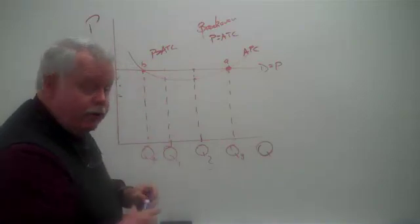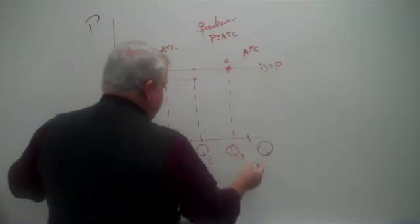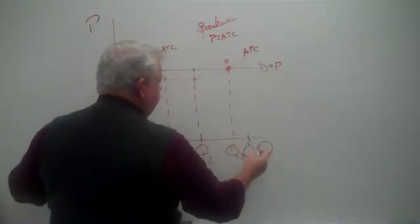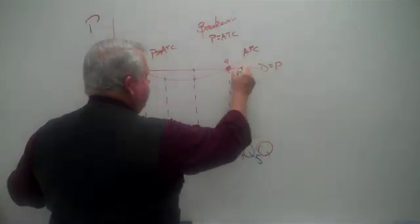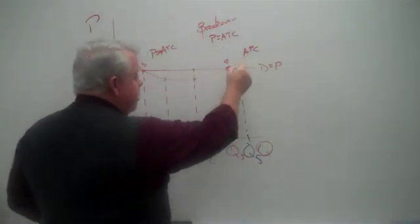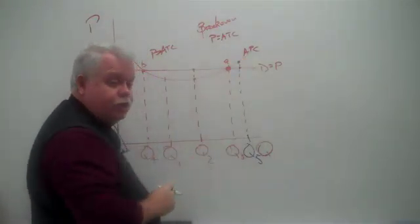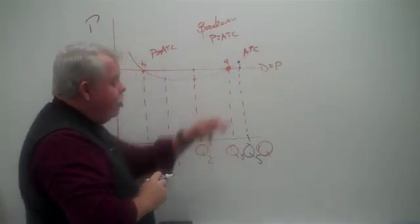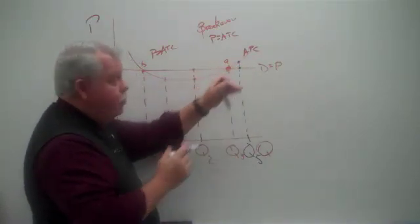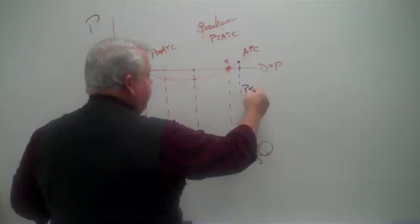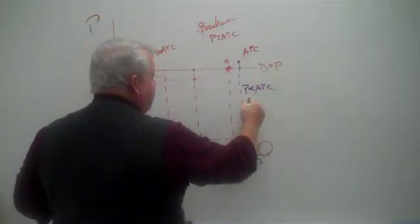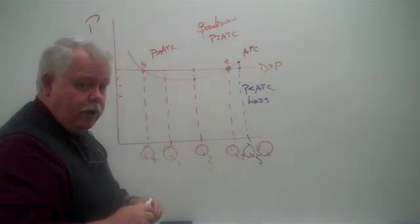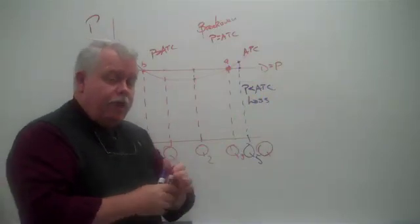Now, let's go one more step. What if I operate out here at Q5? I look up here and I see what? My price is below my average total cost. My cost per unit is more than my price per unit. When price is less than average total cost, I'm operating at a loss. Okay, so far?